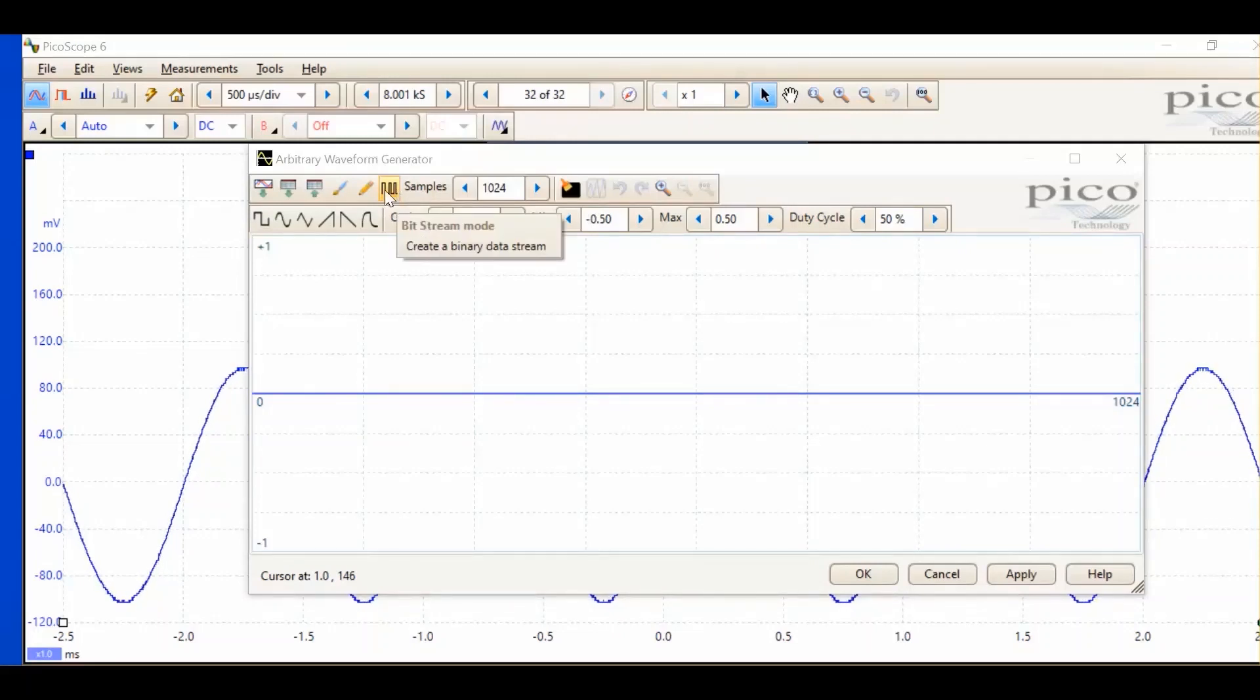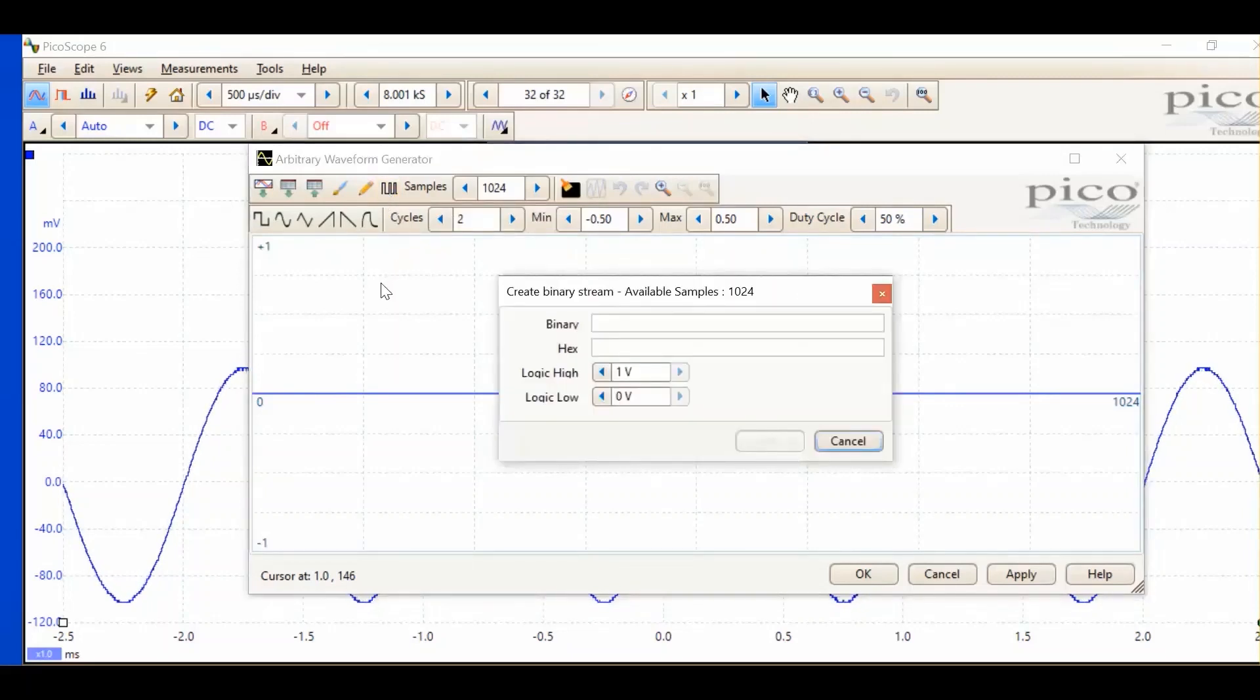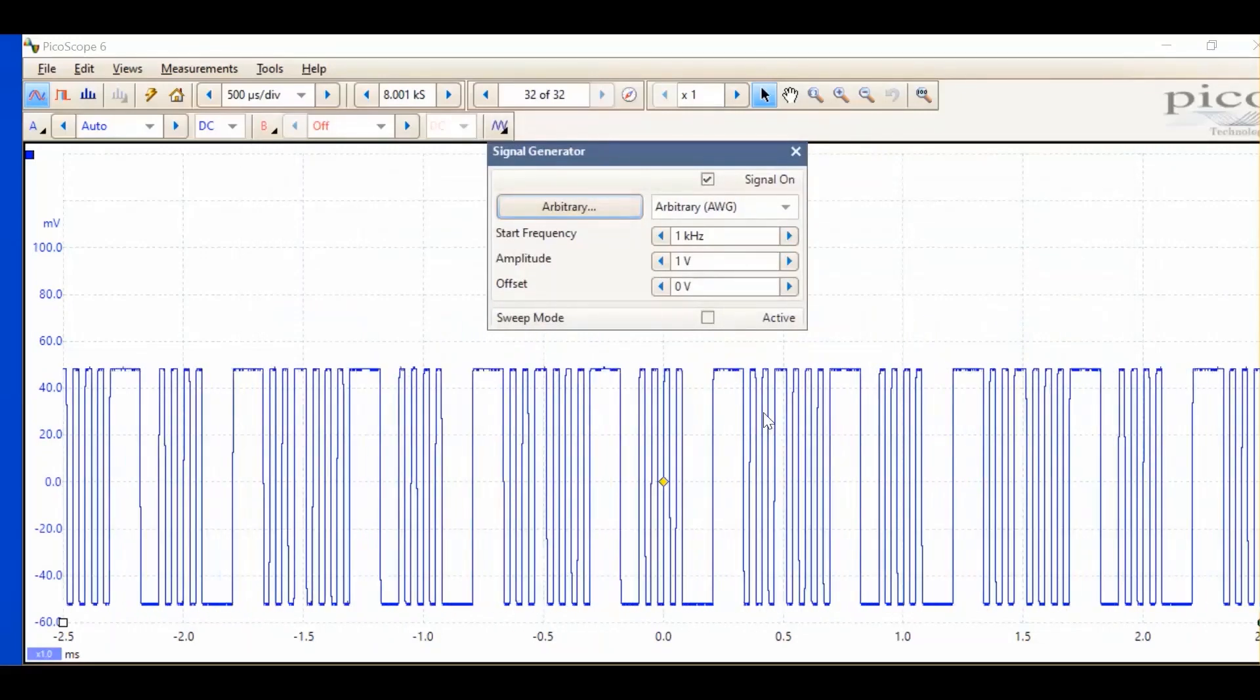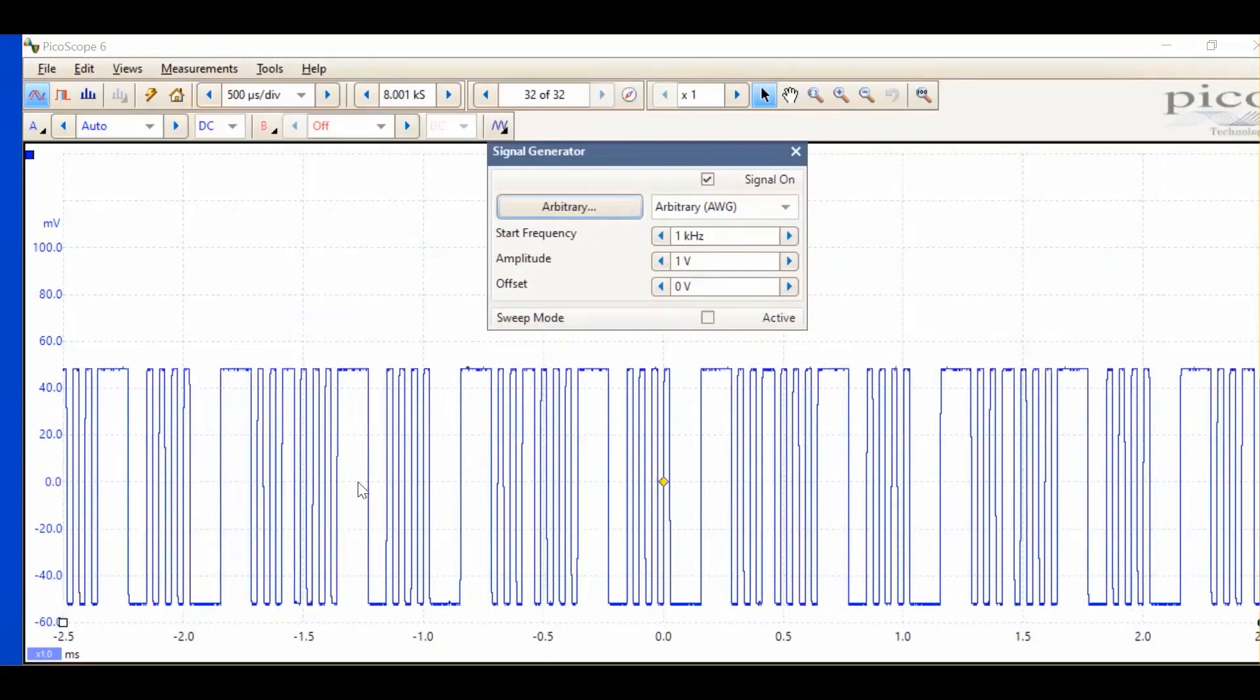Bitstream mode. If I click into this, we'll see this gives us the capability to create a bitstream either with binary or hex. I'm just going to write some random binary here. We can see the hex equivalent is automatically calculated. We can set the logic levels. If I go OK, we can see that's set up in the generator. If I now press OK, this exports it. We can see that bitstream is now displayed in the oscilloscope.